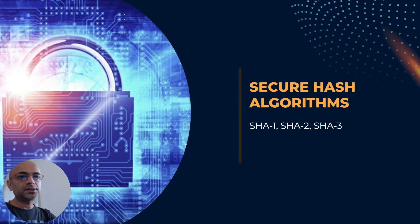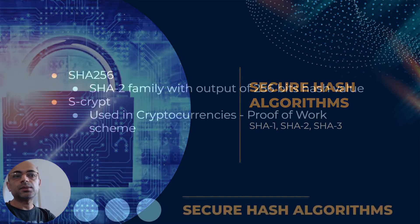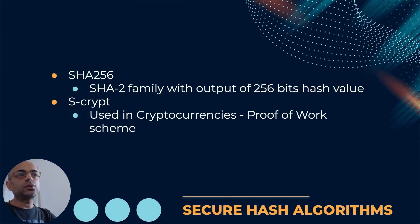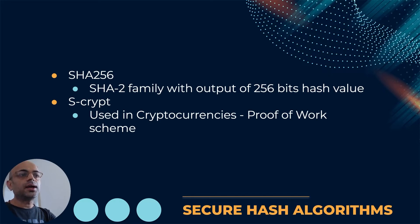There are some secure hash algorithms used for hashing, like SHA-1, SHA-2, and SHA-3. SHA-256 is a hash function from the SHA-2 family which outputs a hash value of 256 bits. There is also one called scrypt, which is used in cryptocurrencies for the proof-of-work scheme. We will check proof of work in later slides.